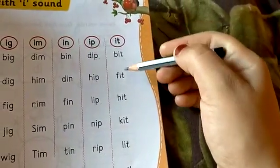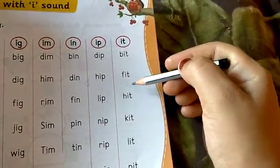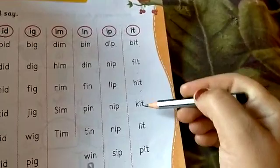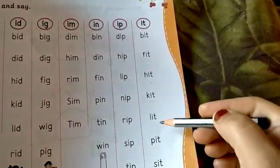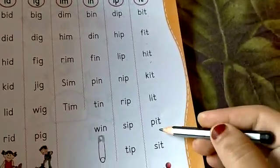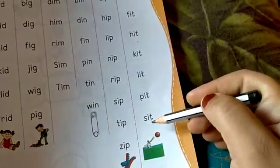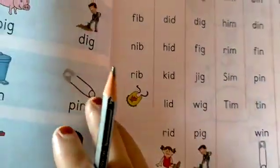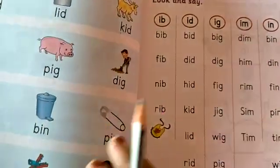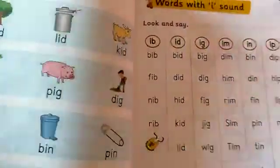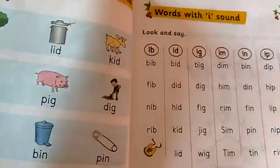B I t, bit. F I t, fit. H I t, hit. K I t, kit. L I t, lit. P I t, pit. S I t, sit. Children, read these words loudly and practice the I sound words.